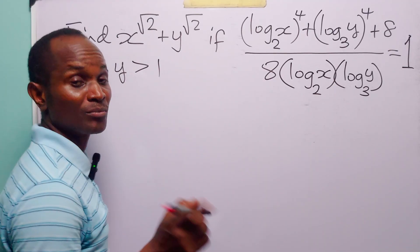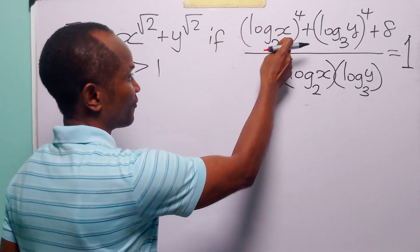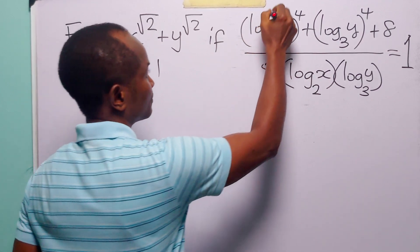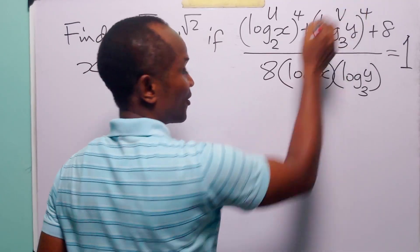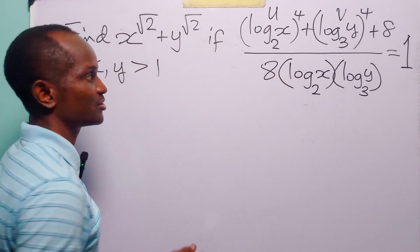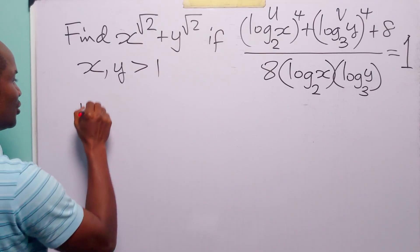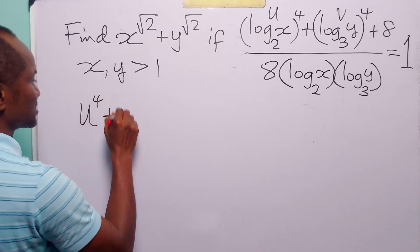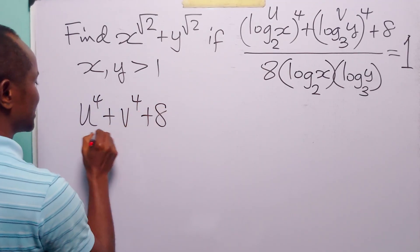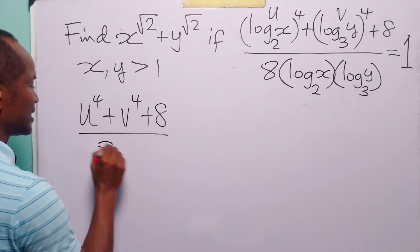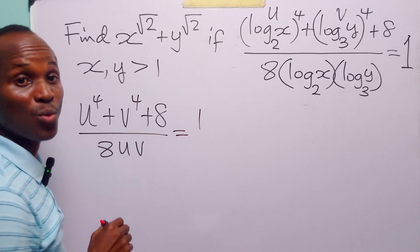To solve this problem, we are going to start by calling log base 2 of x equal to u, and log base 3 of y equal to v. With these two substitutions, this equation becomes u to the power of 4 plus v to the power of 4 plus 8, divided by 8uv, is equal to 1.